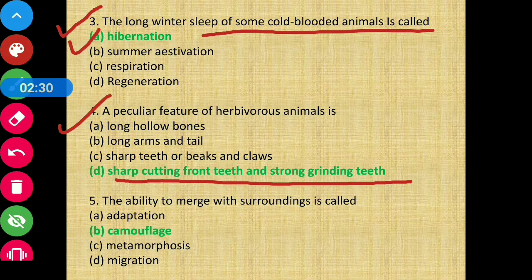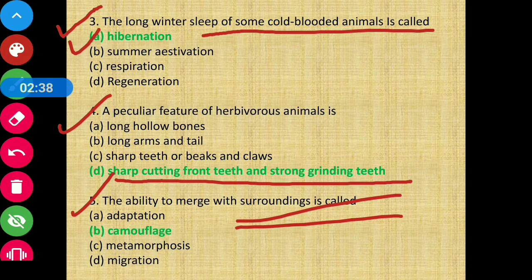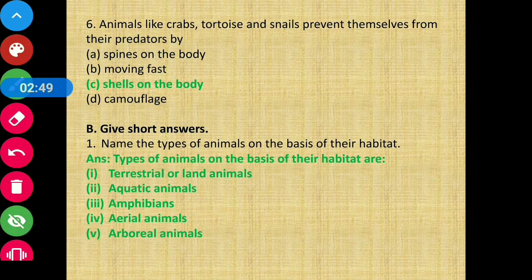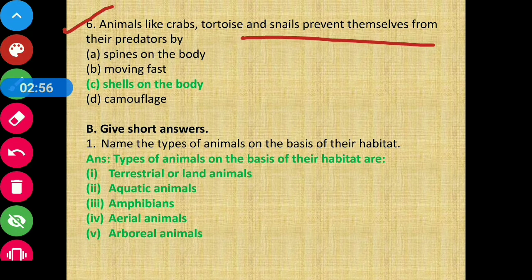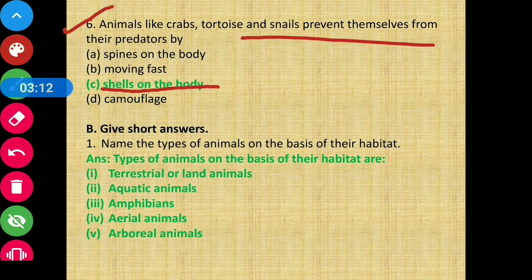Moving on to question number 5: the ability to merge with surroundings — the ability with which they merge with their surroundings is called camouflage. Question number 6: animals like crabs, tortoise, and snails prevent themselves from their predators by using their hard shells — option C is the correct answer.